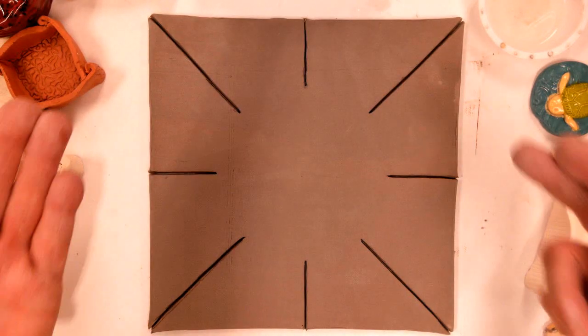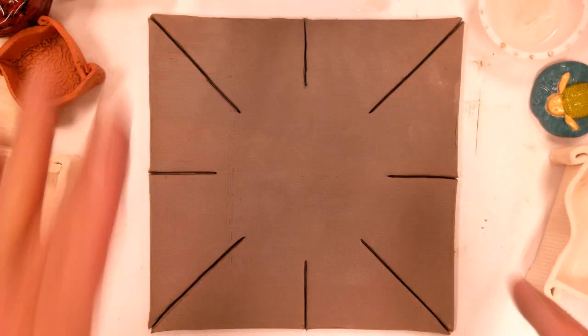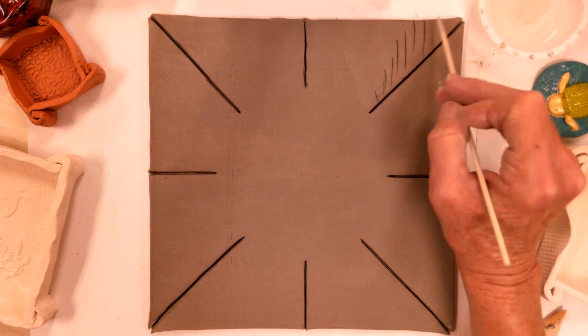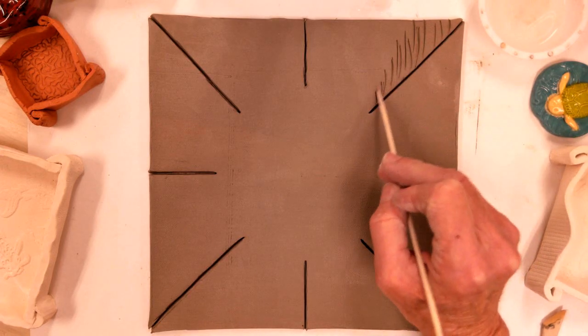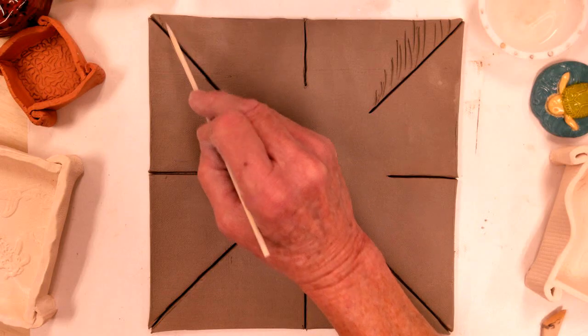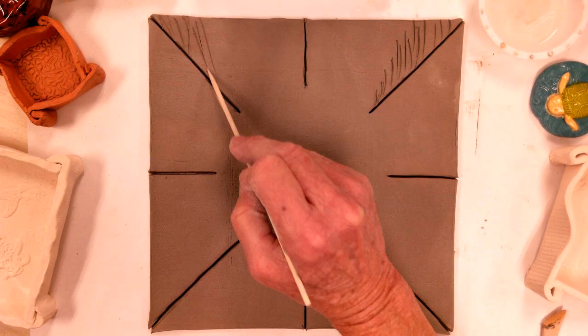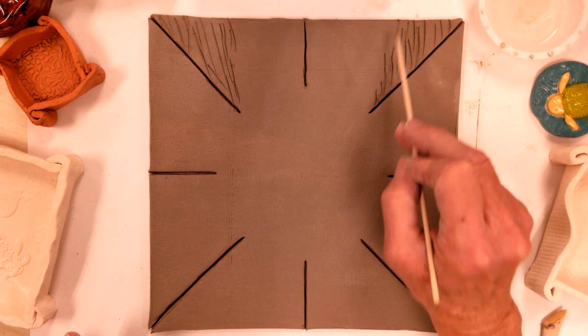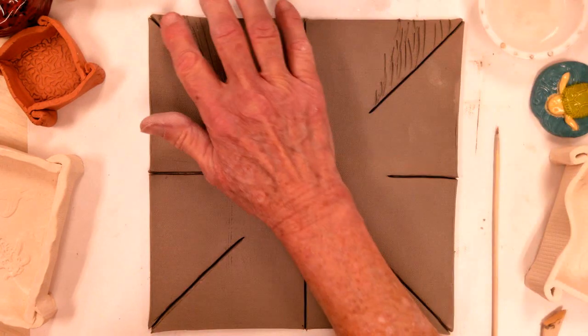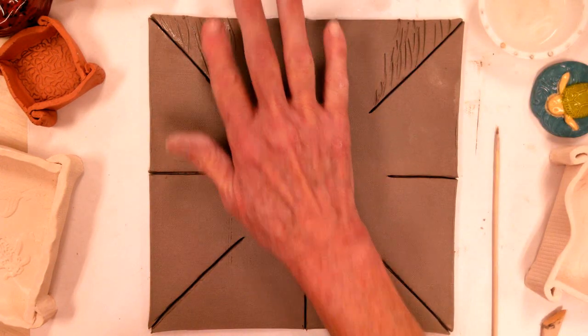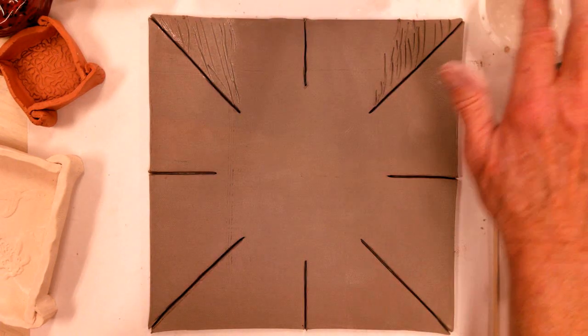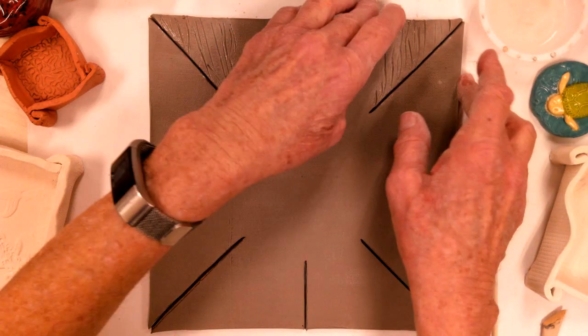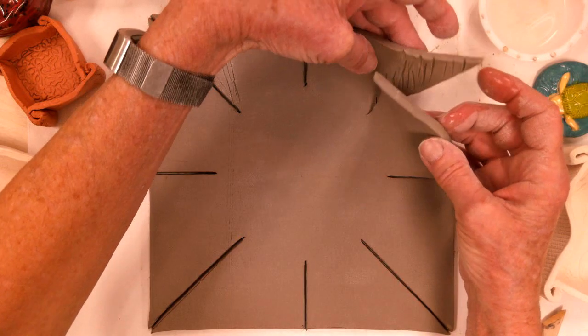So the next step is I'm going to be crossing my corner pieces. So I want to score and slip. Now this clay is a fairly moist clay and I'm going to do the scoring so that these corners are going to come up and match together. And so now I'm going to dab my water on. If this clay was a little older, I would probably use traditional slip. I like to make my own slip because that way I can guarantee it's going to match up with the clay that I'm actually using.